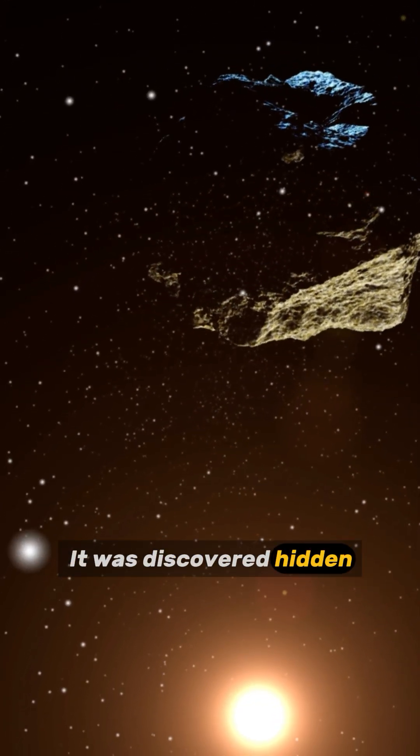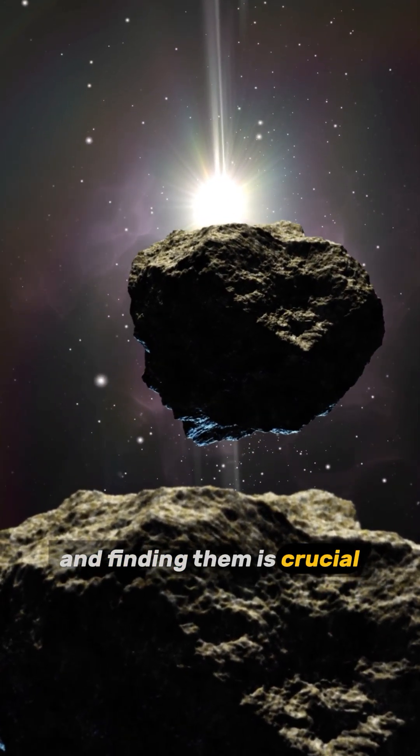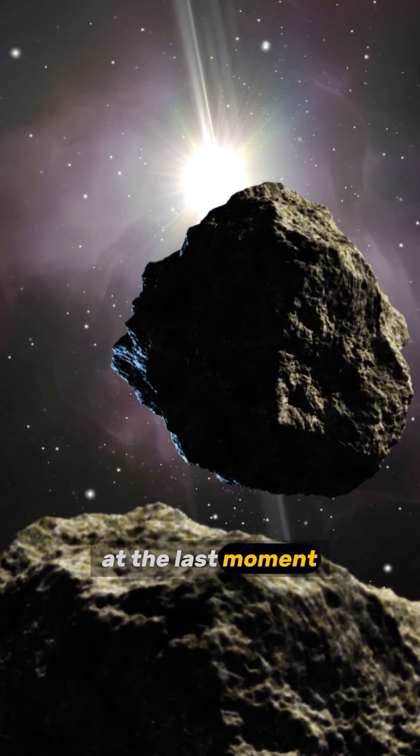It was discovered hidden inside the sun's glare, where the most dangerous asteroids lurk. Astronomers call these twilight asteroids, and finding them is crucial because if one heads toward Earth, we may only see it at the last moment.